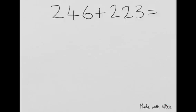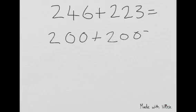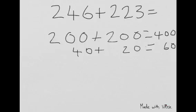246 add 223. First of all, we partition the 200 and the 200 and add those together to equal 400. Then we add the 40 and the 20 together to make 60. And then we add 6 and 3 together to make 9.